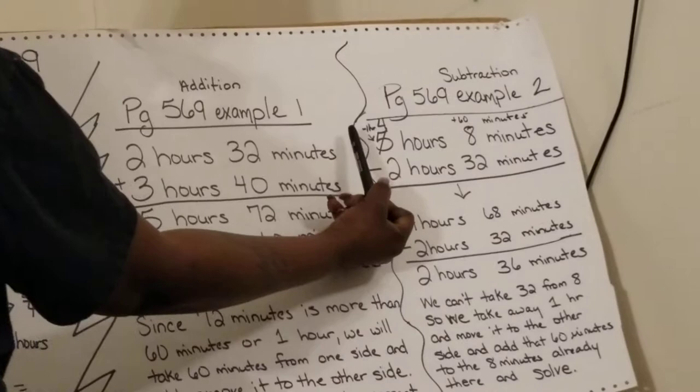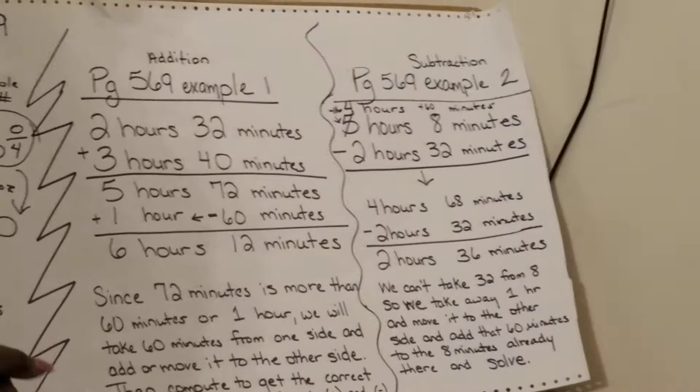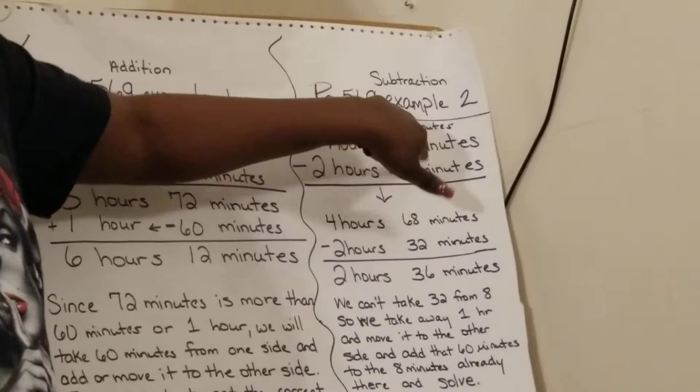Now that hour that I took from here, I'm going to move it over here and add it to that side. But I'm not adding an hour over here. I'm adding 60 minutes, which is the same thing as an hour. But remember the conversion, 1 hour equals 60 minutes.